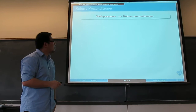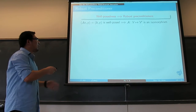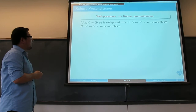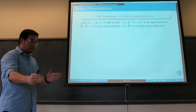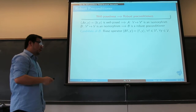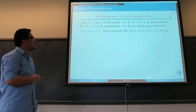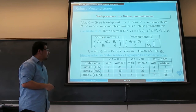Using the well-posedness, we can develop a robust preconditioner. If the problem is well-posed, operator A is an isomorphism from V to V prime. Any isomorphism from V prime back to V will be a preconditioner for A. A natural candidate is the Riesz operator — using the Riesz representation theorem, this gives the preconditioner. For the FSI case, this is a stiffness matrix-type preconditioner.